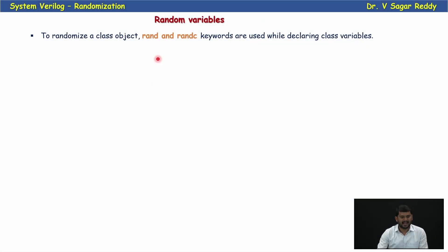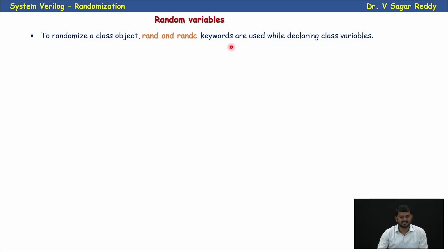Variables which get random values and randomization methods are called random variables. To randomize a class object, the rand and randc keywords are used while declaring class variables.